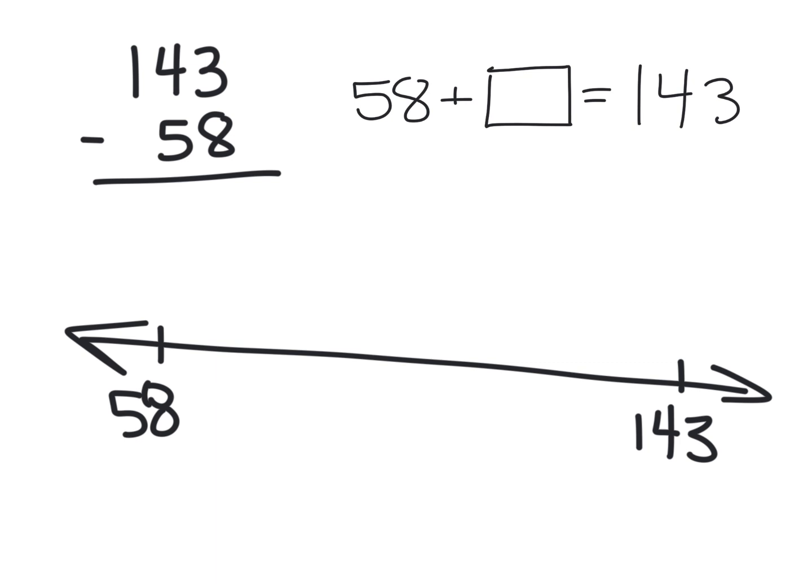And what we want our students to do is figure out how many hops. Now individual hops would be hops of one, right? We could do a hop of one, 59, 60, 61, 62, 63, and we're going to count all the individual hops. But we can take bigger hops to make our thinking a little bit easier and quicker.